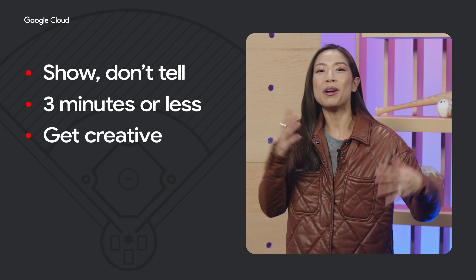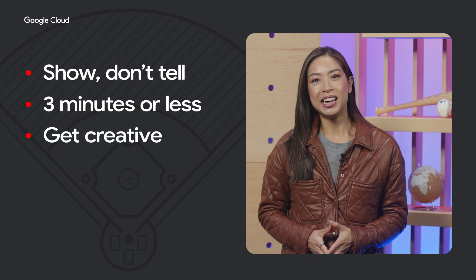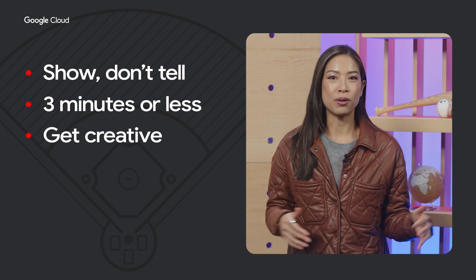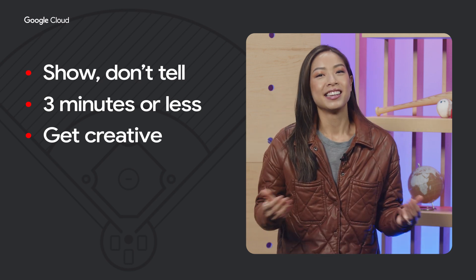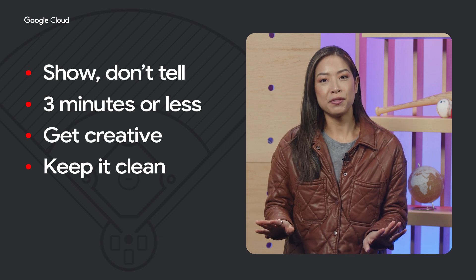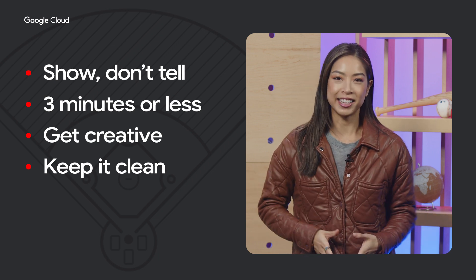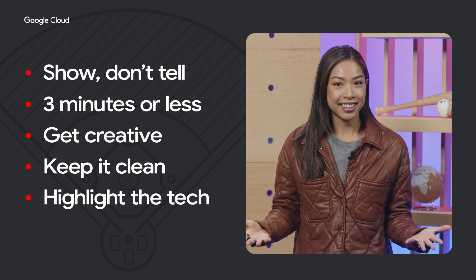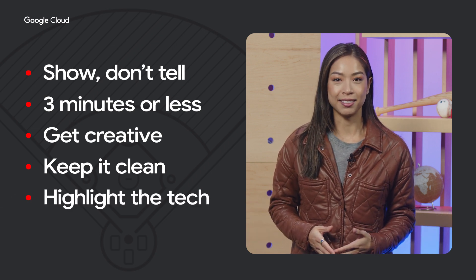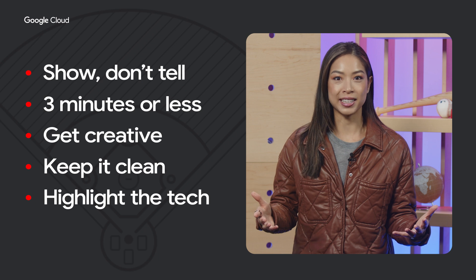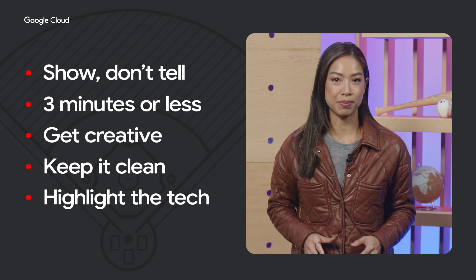Get creative — show off your personality and have some fun in your video. Use animations, music, or even your best baseball announcer voice. Keep it clean — your video could be seen by the whole world if you win, so keep it family-friendly. Highlight the tech: Google Cloud AI is the MVP of this hackathon. Showcase how you use tools like the Gemini API and Vertex AI to power your app's magic.